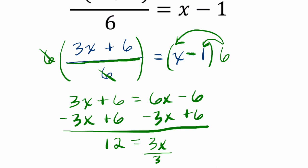So, finally, we can solve our equation, and divide both sides by three. Three divided by three is one, and 12 divided by three is four, so x is four.